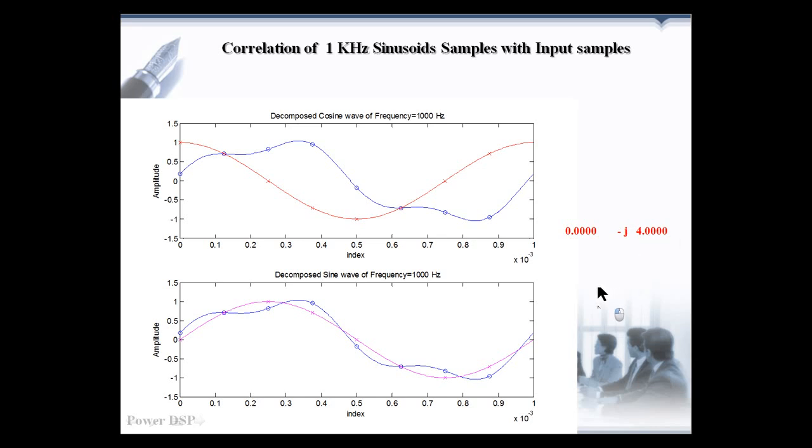Let us move to the next case. Here, we are correlating the 2 kHz sinusoid with the input signal. The output that we get here is 0. So, there isn't 2 kHz sinusoid in the input signal.